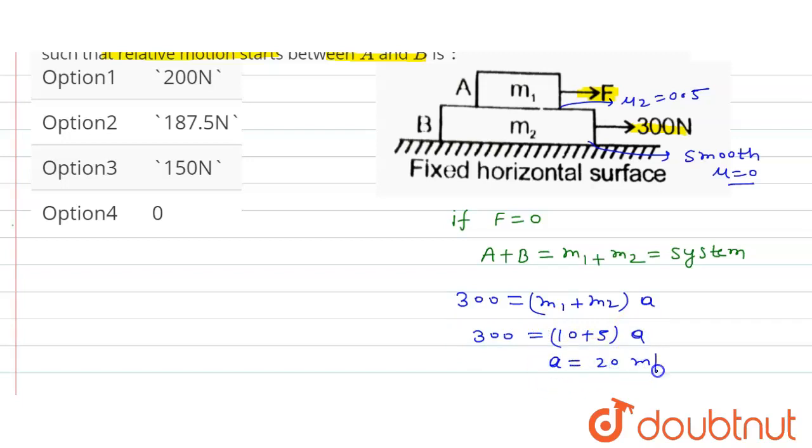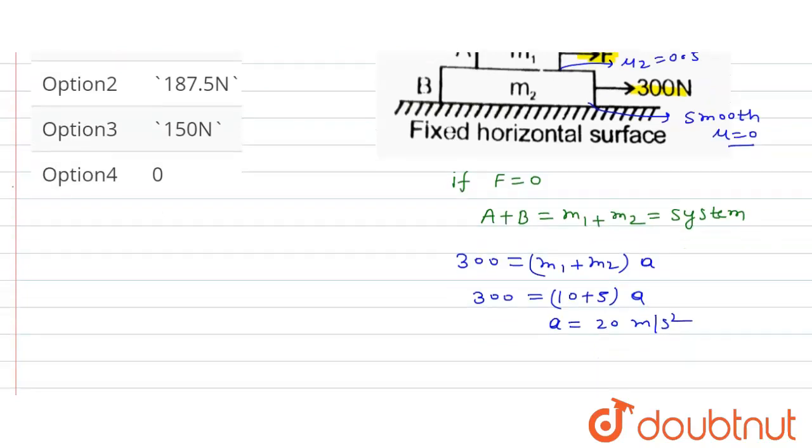So acceleration if we assume m1 m2 as a system will be 20 meter per second square. Now for the relative motion here.